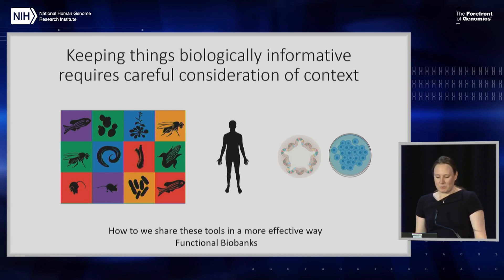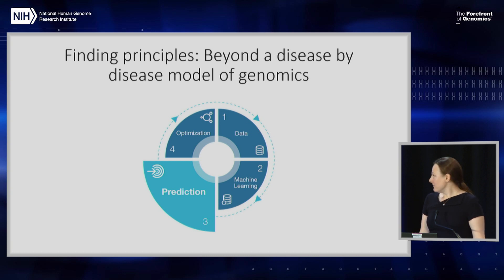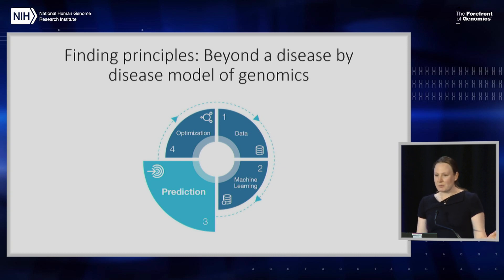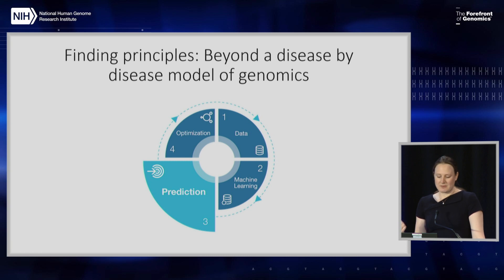At the moment we need more functional insight before we can really predict how changes in sequence affect function. But ideally, with enough data, we should be able to find principles that let us go beyond a disease-by-disease model of genomics and predict what types of mutations in enhancers are most likely to have a phenotypic impact. If we have a gene with various different SNPs, can we predict the severity of the phenotype? It will be interesting to see how much data we need to reach really accurate prediction.